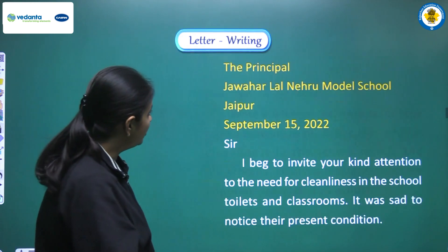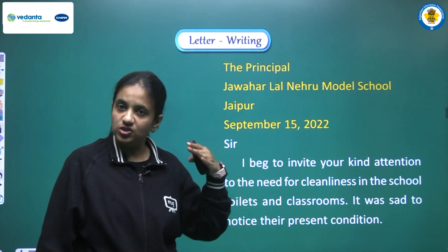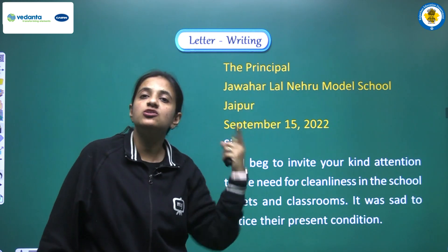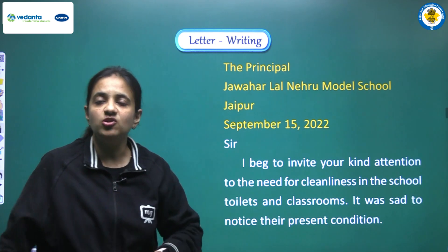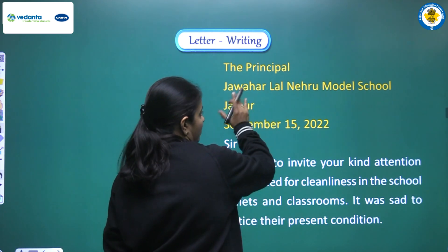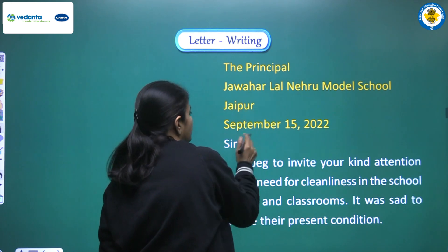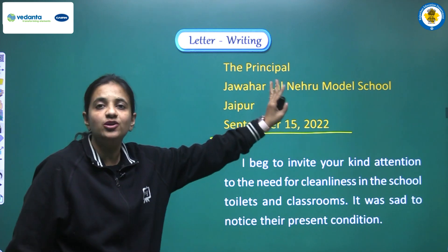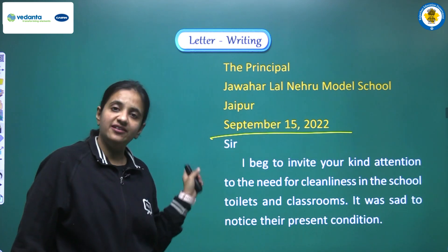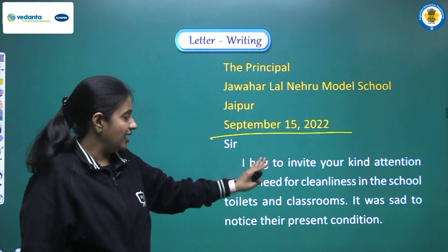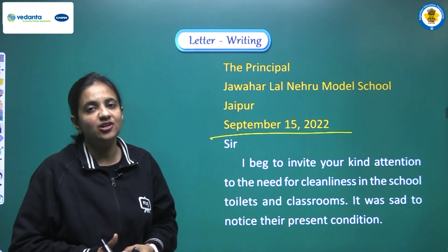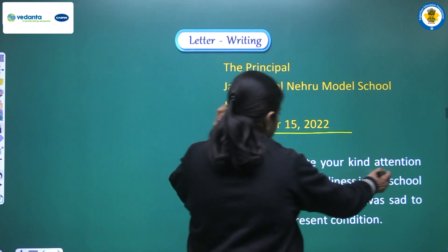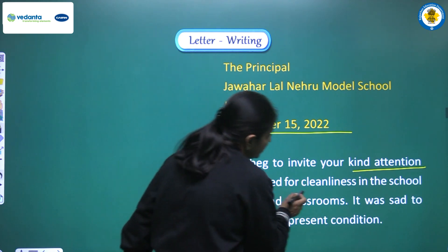Now let's see how we can write this formal letter. First of all we address it to the Principal. The name of the school was not given in our question so we can use any school name — we are writing Jawaharlal Nehru Model School, Jaipur. Next we write the date: September 15, 2022. Then we address our principal as 'Sir' and begin the subject matter or body of the letter.